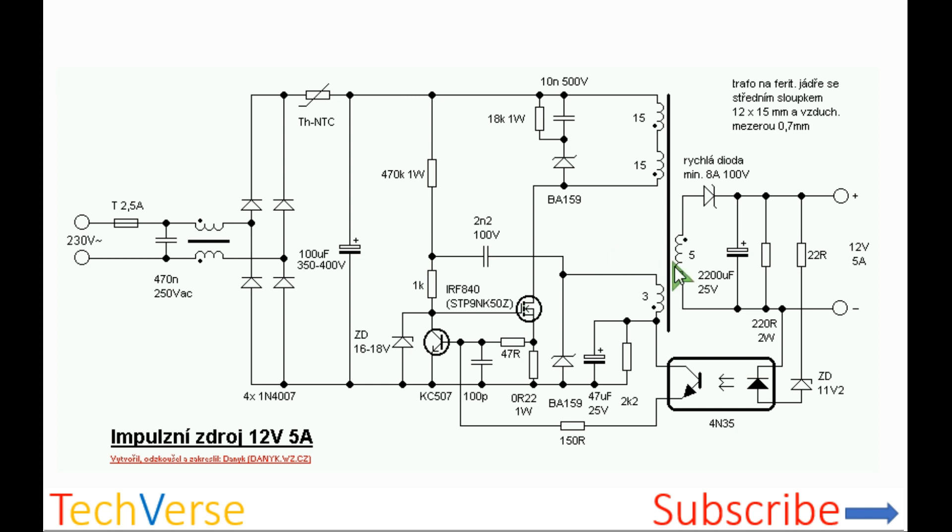All the energy stored in the core is transferred to the secondary, where it is rectified by this high frequency diode, which should be rated at at least 100 volts and 8 amperes. It's then filtered by this output capacitor. This minimum load ensures that the output remains stable.